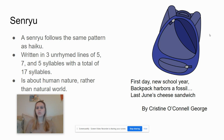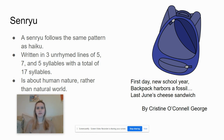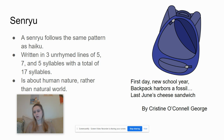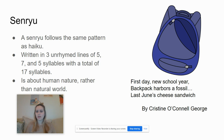Next is a senryu. This is just like a haiku — it follows the same exact pattern. But this one's more about humans and human nature, just everyday things, instead of the natural world. This example is by Christine O'Connell George: 'First day, new school year. Backpack harbors a fossil — last June's cheese sandwich.'